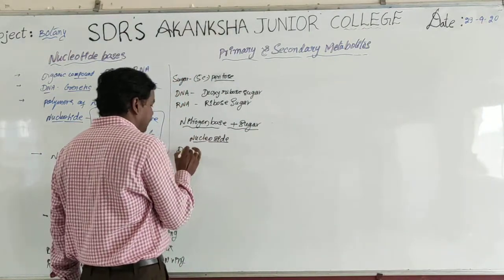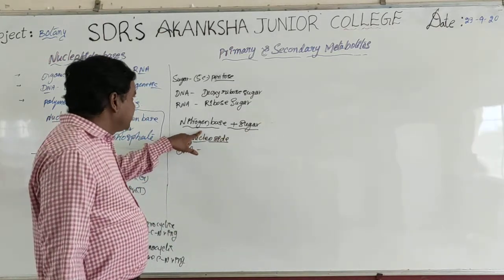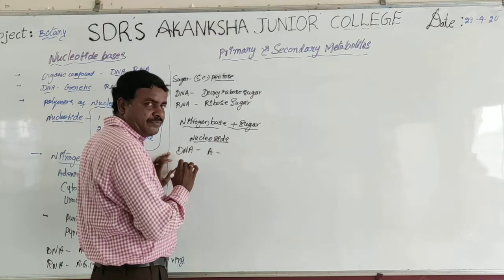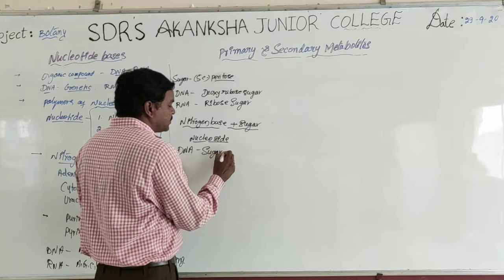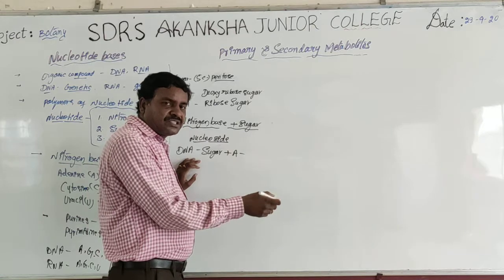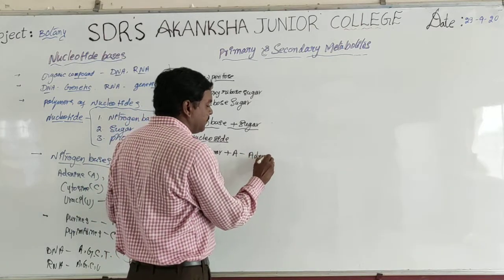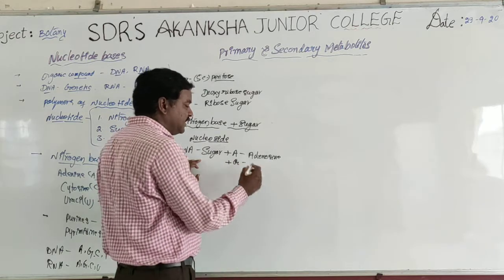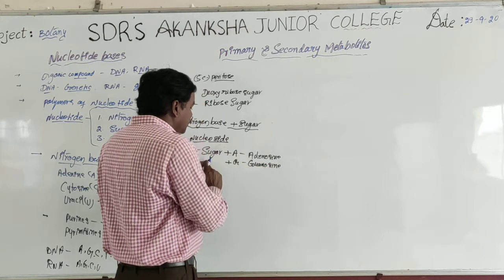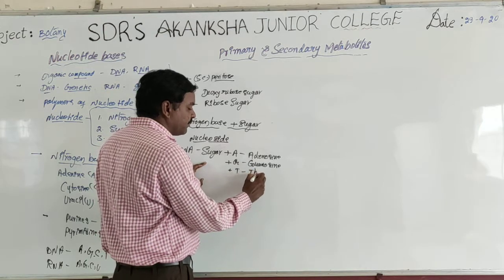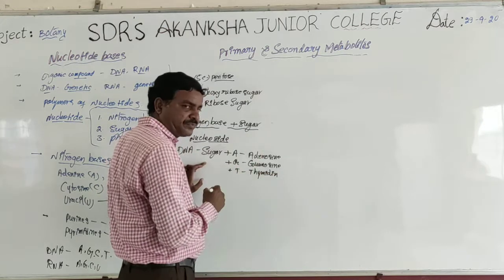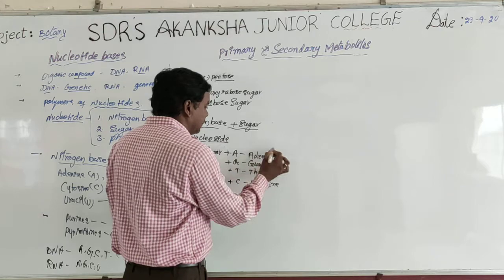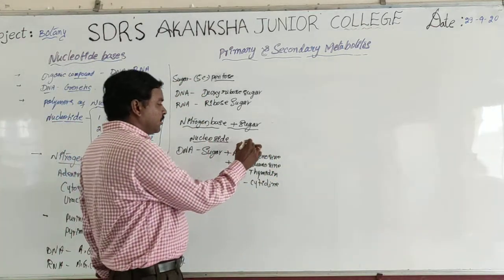In DNA, the sugar in association with the four types of bases forms nucleosides. The sugar in association with Adenine leads to the formation of a nucleoside called Adenosine. The sugar in association with Guanine leads to the corresponding nucleoside Guanosine. In total, four types of nucleosides are formed in DNA.